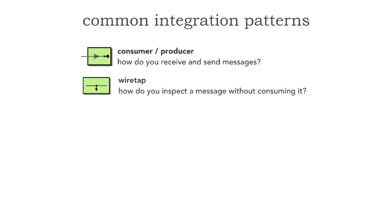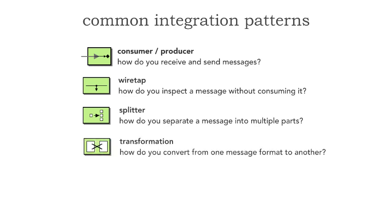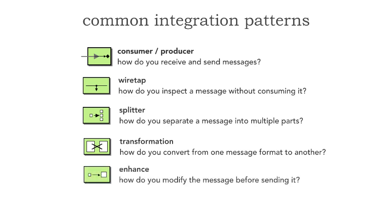Then we'll see a wiretap — very common, used quite frequently for auditing — how do you inspect a message without consuming it? The third is a splitter pattern: how do you separate a message into multiple parts? Then transformation: how do you convert from one message format to another? And finally, enhancement: how do you modify the message before sending it? These match a lot of the capabilities we saw in lesson 39.